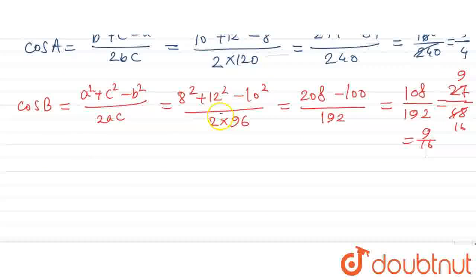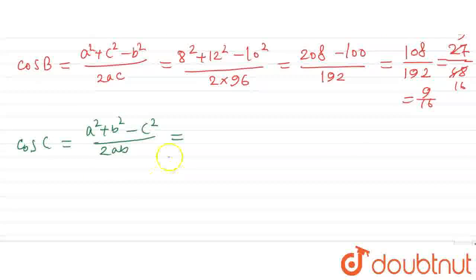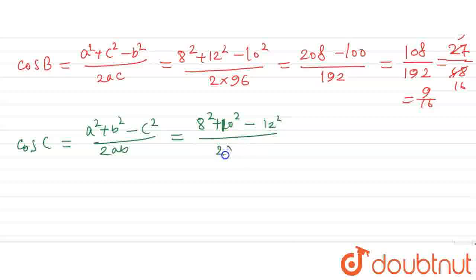Now, cos C. So here, cos C, c means a squared plus b squared minus c squared by 2ab. So a and b, 8 and 10. So 8 and 10 will be used in the formula. So 8 squared, 10 squared minus 12 squared by 2, 8, 10. So 2 multiplied by 80. And 8 squared is 64, this is 100. So 164 minus 144. And here we get 160. So here, 20 by 160, that is 1 by 8.